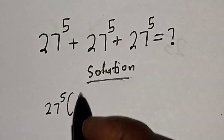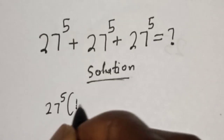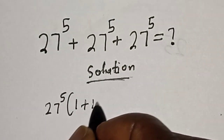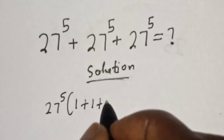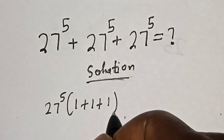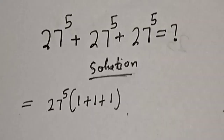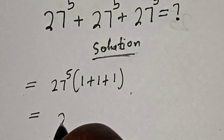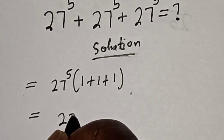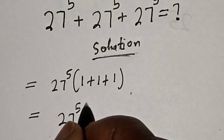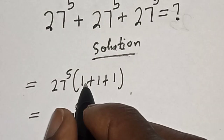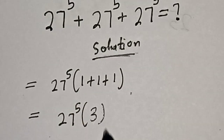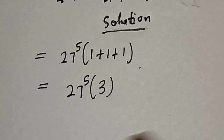This divided by this we have 1, plus this divided by this 1, plus this divided by this 1. This is equal to 27 raised to power 5, bracket 1 plus 1 plus 1, that is 3.